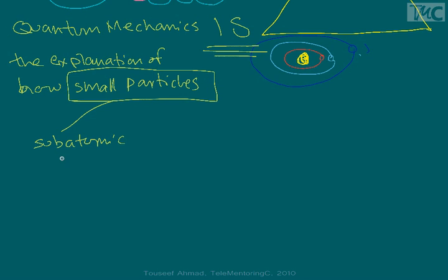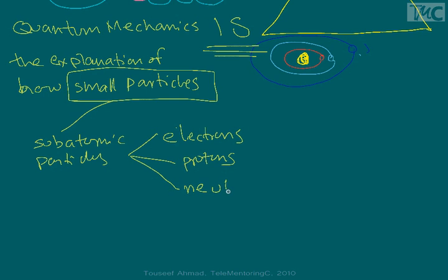Subatomic particles, particles such as electrons, particles such as protons. We have, don't forget the poor neutral neutrons.